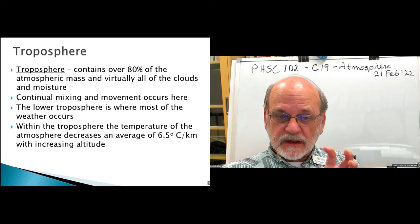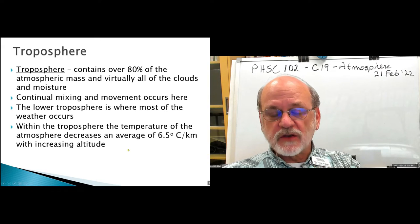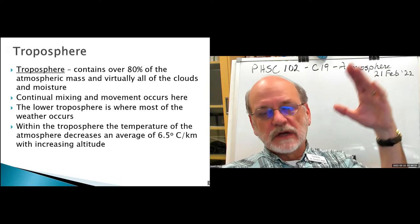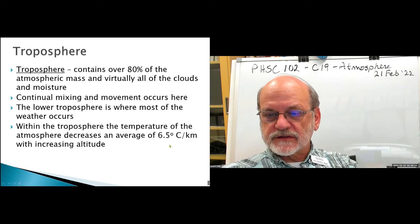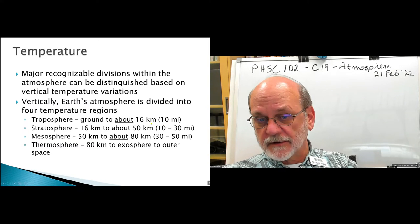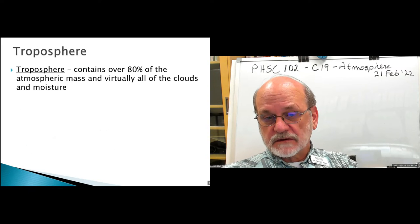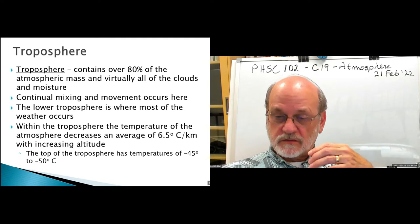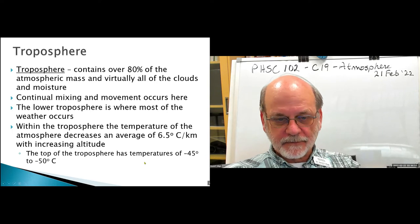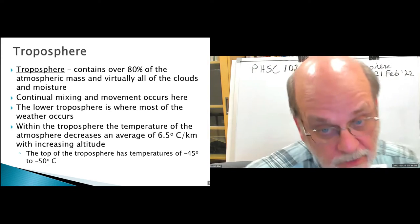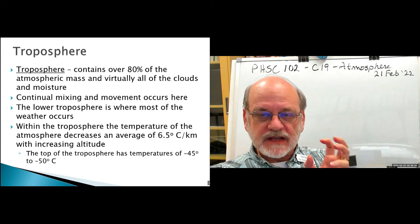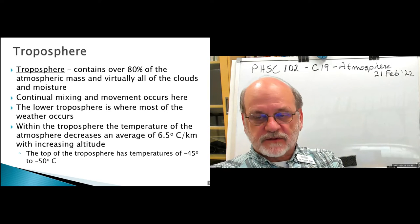As a general rule, the temperature of the atmosphere decreases an average of 6.5 degrees Celsius for every kilometer. This is not hard and fast — just a general decrease. If the troposphere extends to about 16 kilometers, then 16 times 6.5 tells you that by the time you reach the upper troposphere, you're down to around minus 50 degrees Celsius — very cold, though some places on the Earth's surface can reach such temperatures.